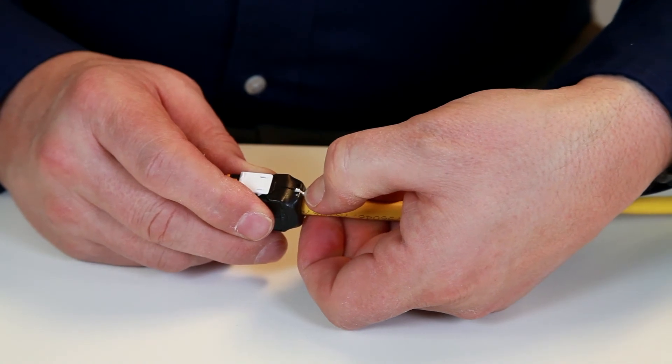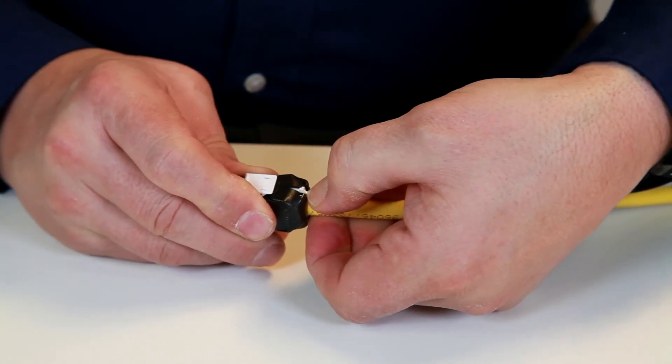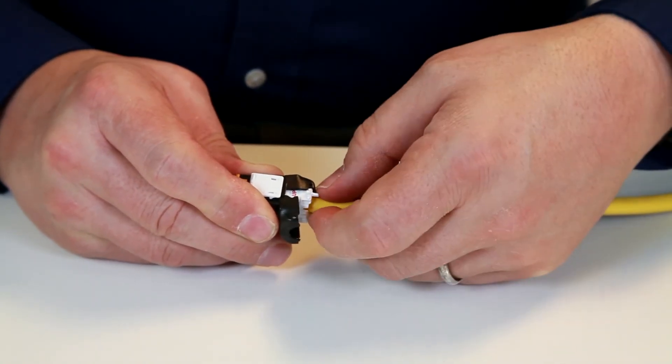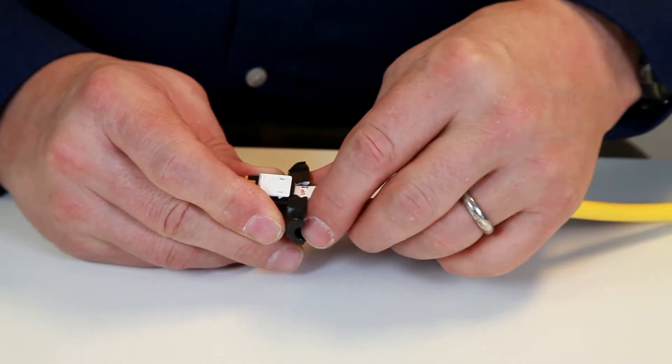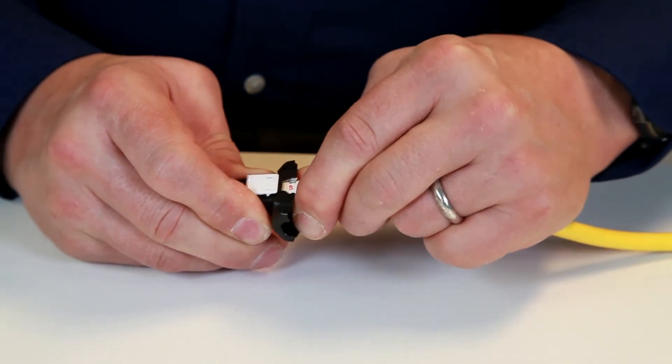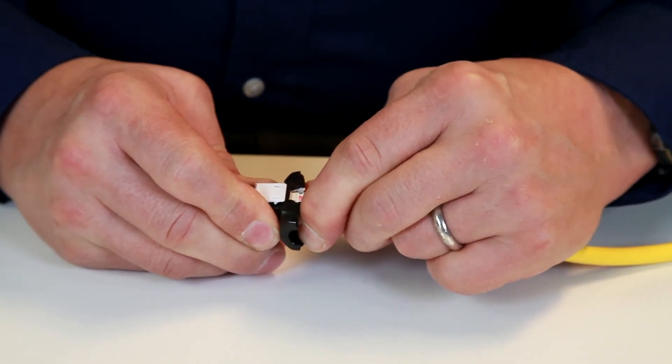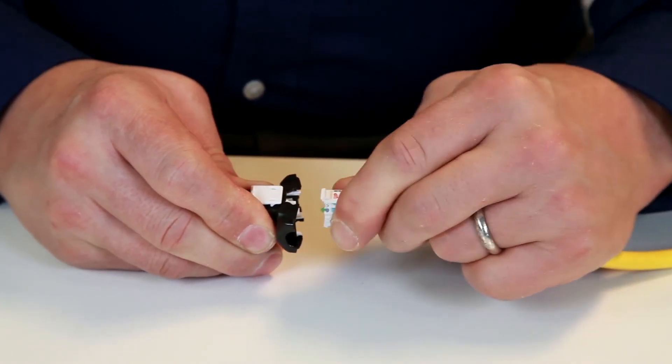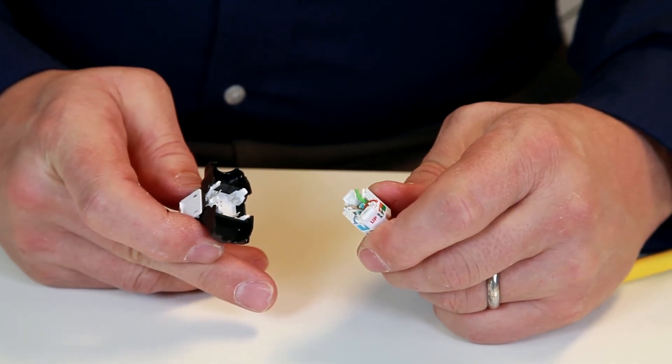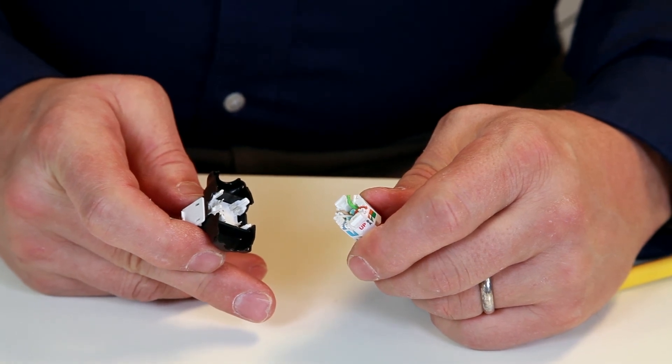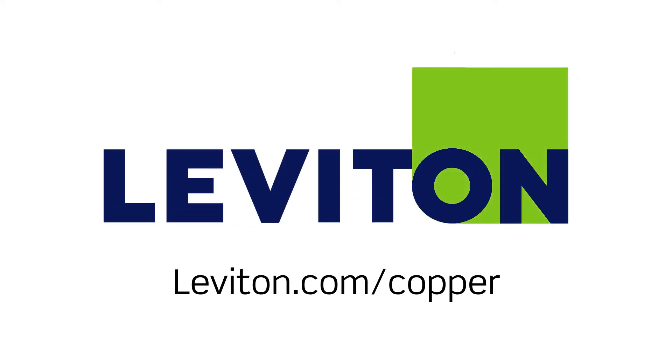If you need to re-terminate a jack for any reason, these door release levers at the rear of the wire manager need to be depressed simultaneously, and just wiggle it until it pulls off of the jack IDCs. This jack is ready for re-termination now. For more information, visit leviton.com/copper.